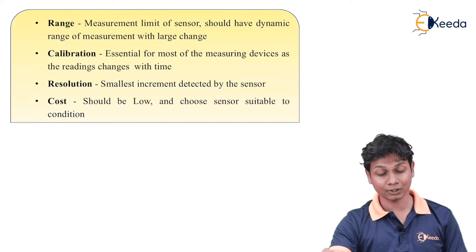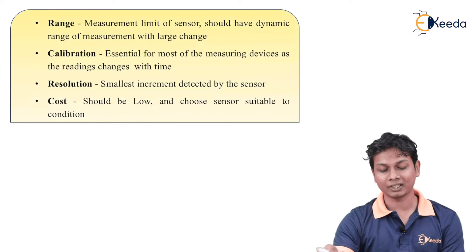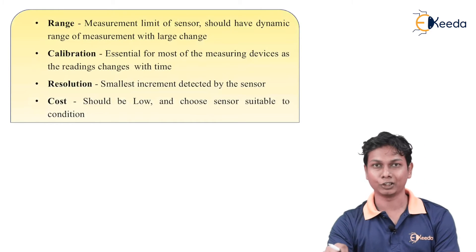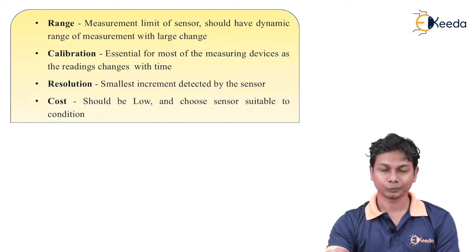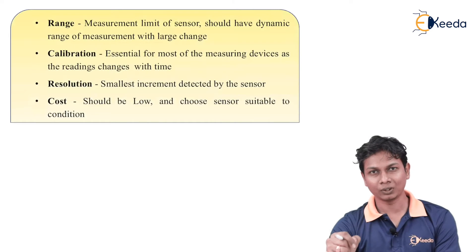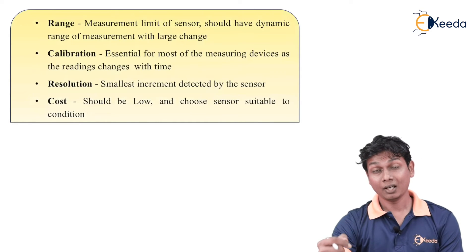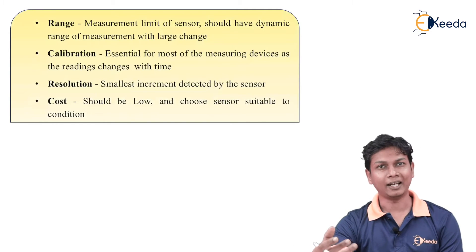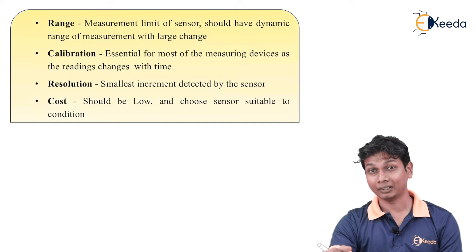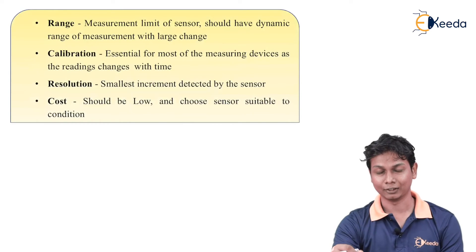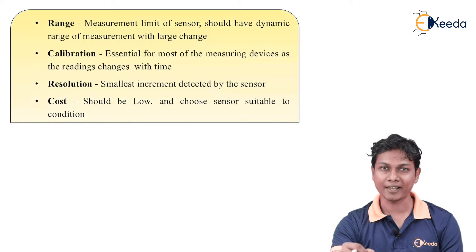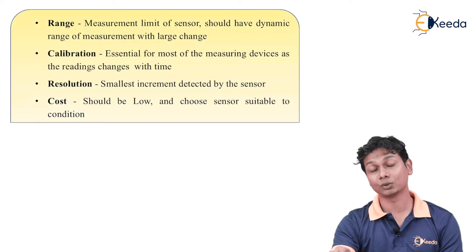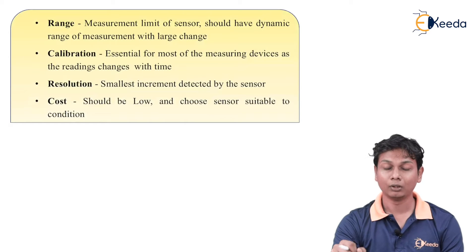The next part is resolution — the smallest increment detected by the sensor. This is related to range. If we have to sense a particular signal, it can be high or low. A high signal can easily be detected by the sensor. But for a low signal, it should also be captured with a good output. So the resolution is important for low-level signals.